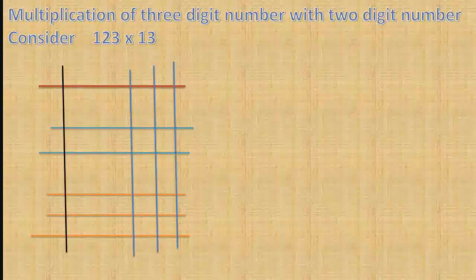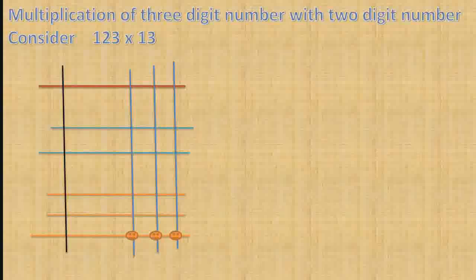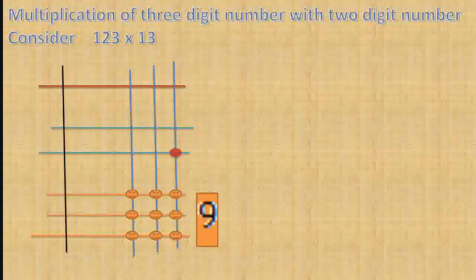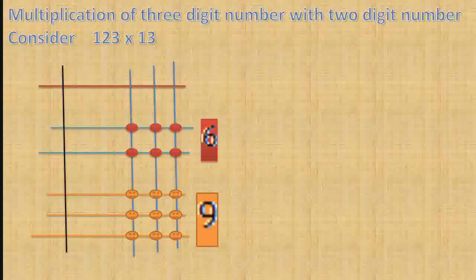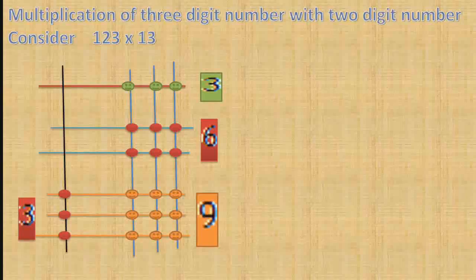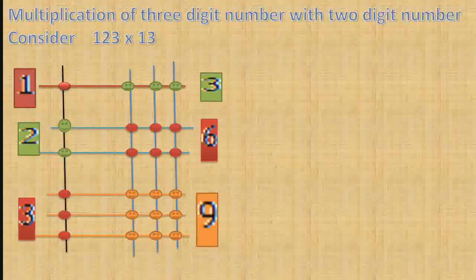Count the points of intersection in each region. The regions give the counts: 9, write 9. Then 6, write 6. Then 3, write 3. Then 3, write 3. Then 2, write 2, and 1.